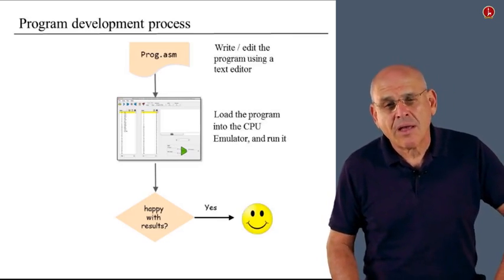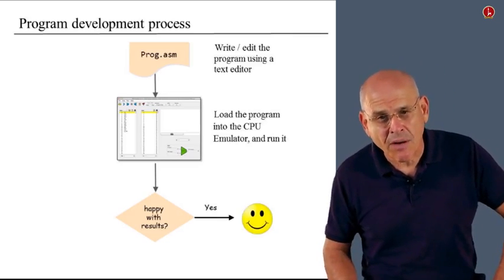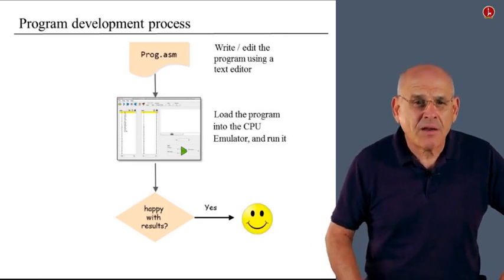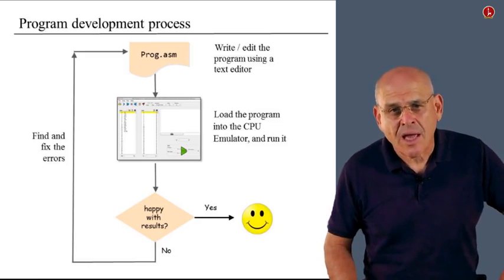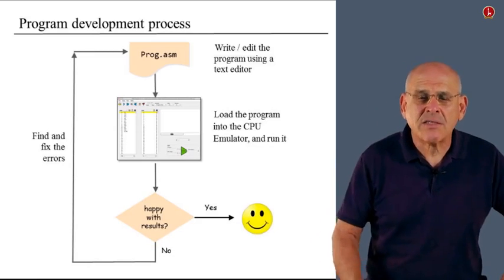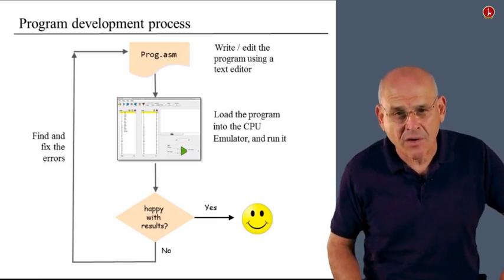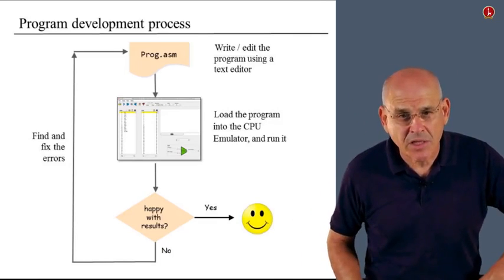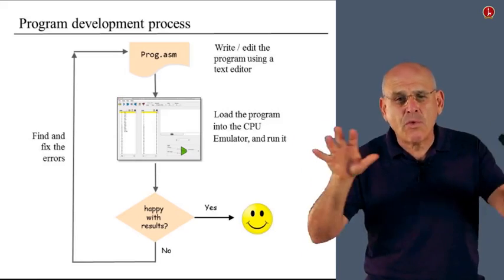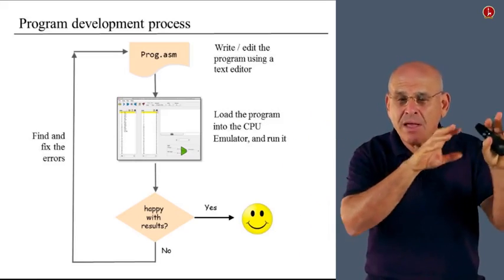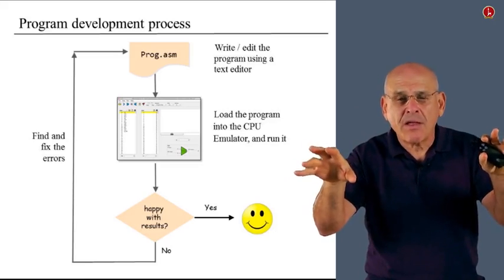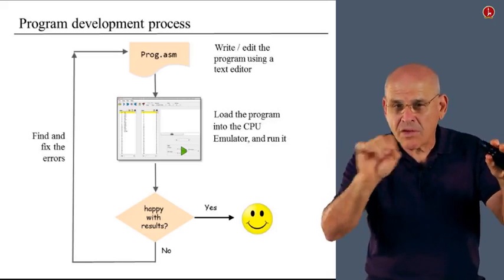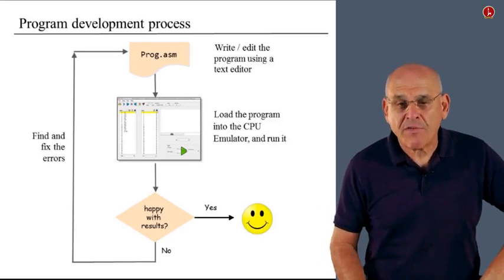If you are unsatisfied with the program, which will probably be the case in the first few iterations of debugging, then you fix the program. You look for errors and you fix the errors. And you fix them by going back into the text editor, working in the editor, saving the program again, reloading it into the CPU emulator, and so on. So it's quite convenient to have two windows opened on your screen at the same time. The text editor here, CPU emulator there, and you can easily move between the two but don't forget to load your updated program after you fix it.